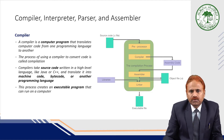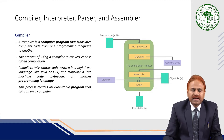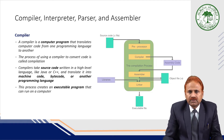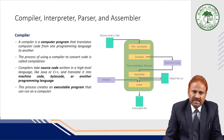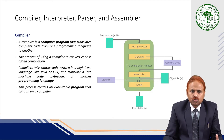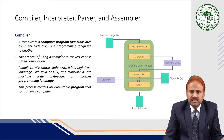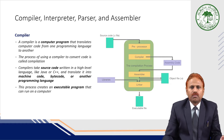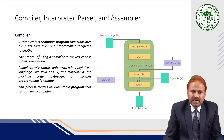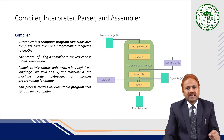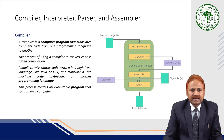A compiler is a computer program that translates computer code from one programming language to another. The process of using a compiler to convert code is called compilation. Compilers take source code written in a high-level language like Java, C, or C++ and translate it into machine code, bytecode, or another programming language. The process creates an executable program that can run on a computer.